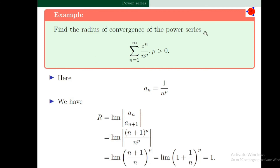Find the radius of convergence of sigma n=1 to infinity z^n / n^p, where p > 0. Here a_n = 1/n^p. Using the formula R = lim |a_n / a_{n+1}| = lim (n+1)^p / n^p = 1. So the radius of convergence of this power series is 1.